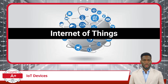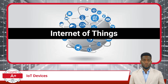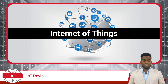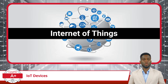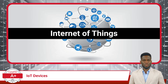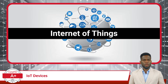Essentially, IoT refers to a vast network of physical devices, objects, and sensors that are connected to the Internet. These devices have the capacity to collect, exchange, and transmit data. They encompass a wide array of items, from common household objects to sophisticated industrial equipment.